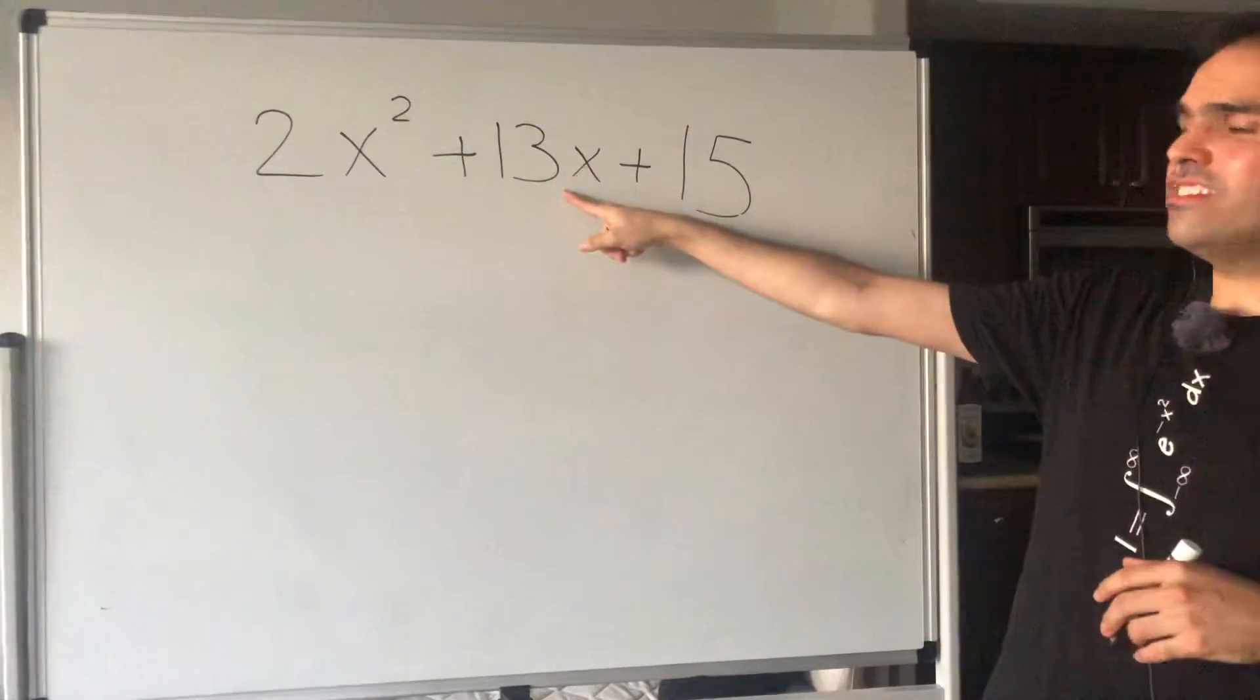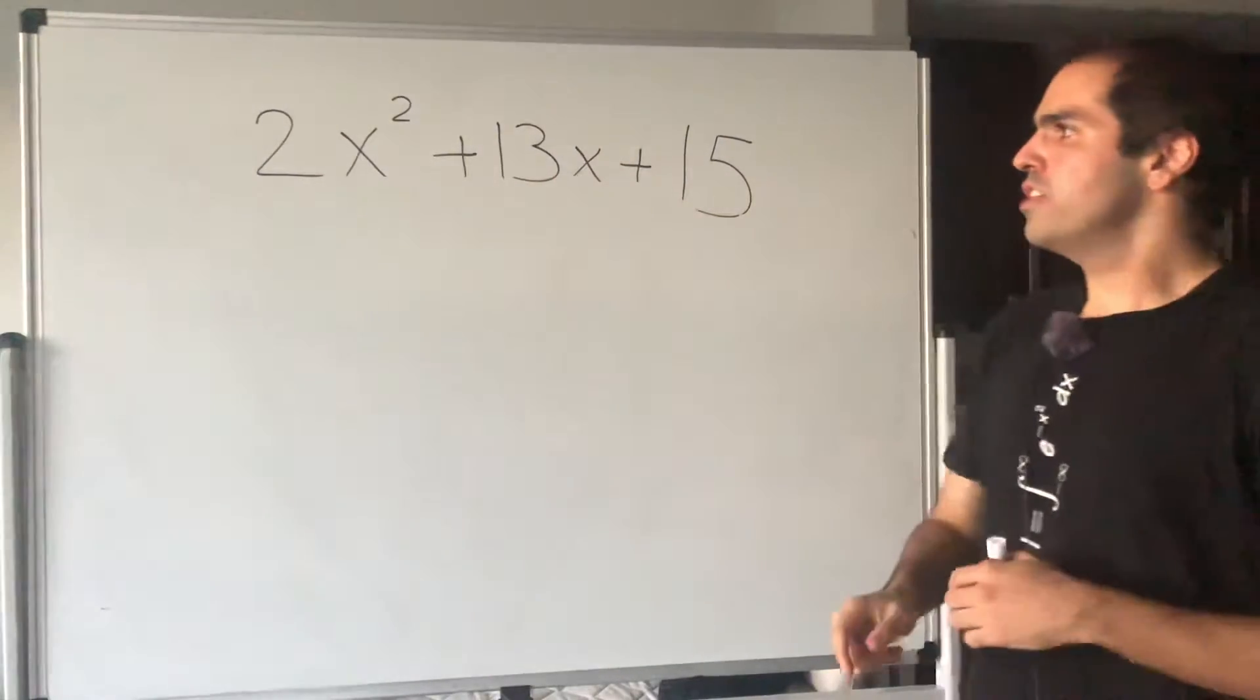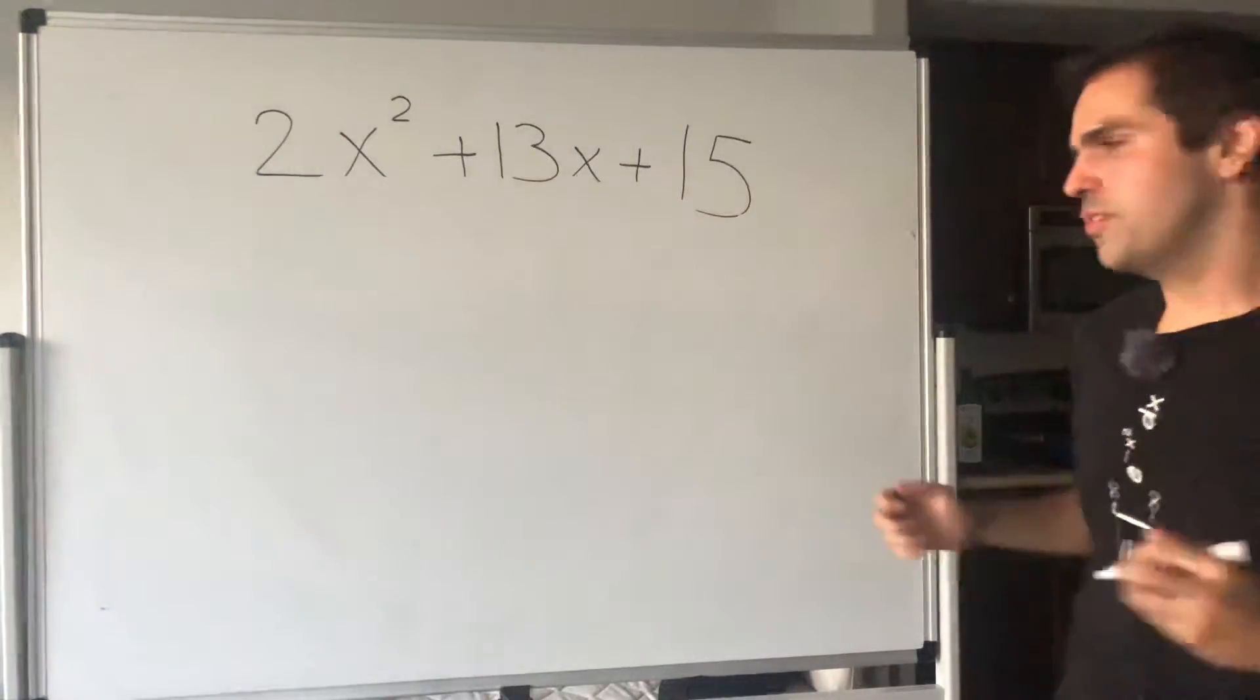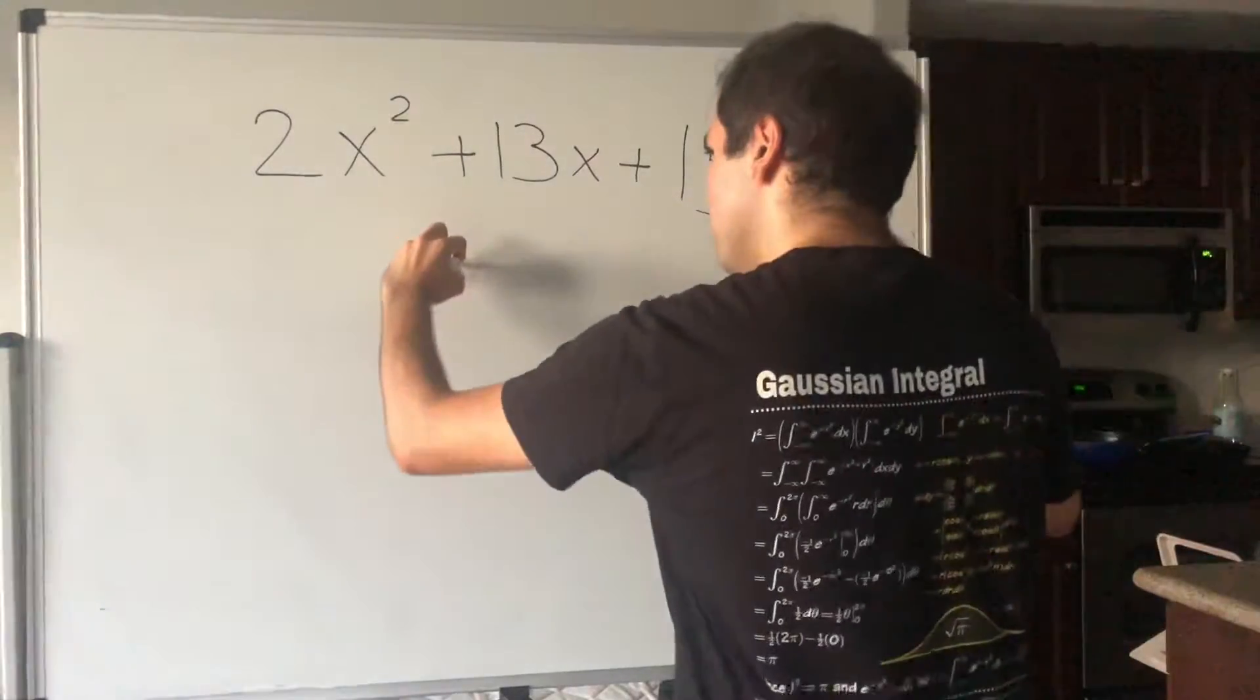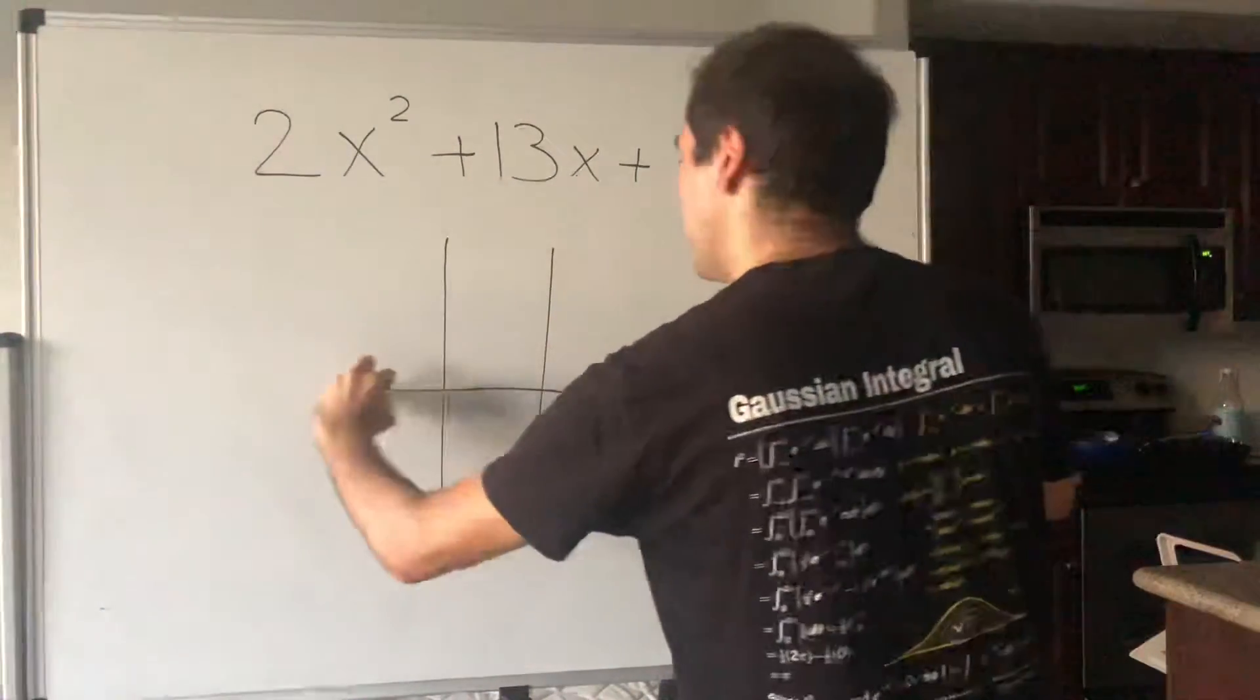So for instance, let's calculate 2x squared plus 13x plus 15. Let's try to factor that out. So the way it works, you just draw a tic-tac-toe table.